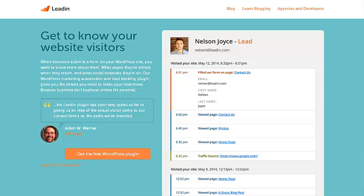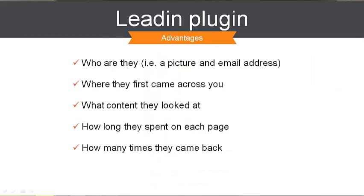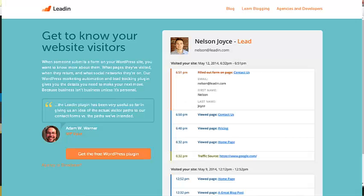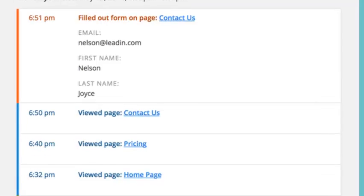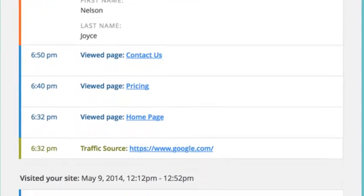LeadIn is a marketing automation and lead tracking plugin for WordPress. Unlike Google Analytics, which just presents anonymous data, LeadIn shows you a picture of each customer, their email address, along with everything they've ever done on your website. It tracks where they first came from, what content they've looked at, how long they spent on each page, how many times they came back — everything.